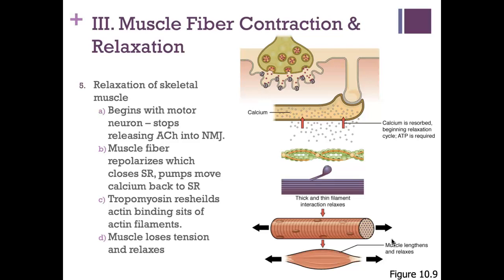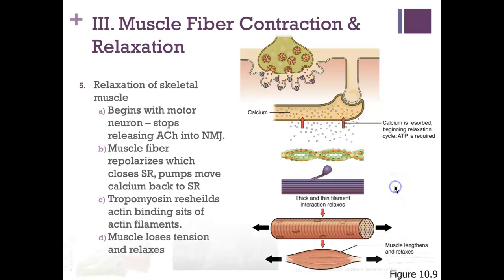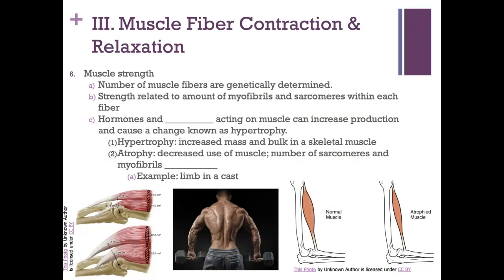Muscle relaxation begins when the motor neuron stops releasing acetylcholine into the neuromuscular junction. Acetylcholinesterase breaks down any remaining acetylcholine, stopping receptor binding. The muscle fibers repolarize, and calcium is pumped back into the sarcoplasmic reticulum. Without calcium bound to troponin, tropomyosin reshields the actin binding sites, and the muscle loses tension and returns to its original relaxed state.